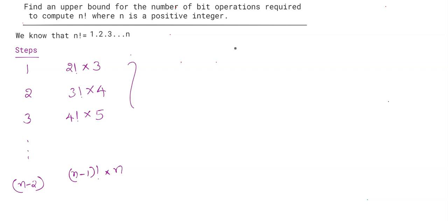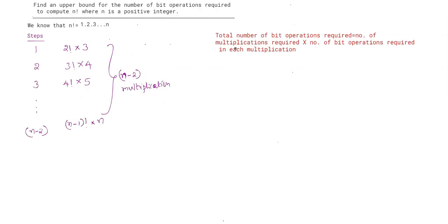Thus we can see that we require n−2 multiplications to obtain n factorial. We have decomposed the process of finding factorial into a number of multiplications. The total number of bit operations required to obtain n factorial equals the number of multiplications required times the number of bit operations required in each multiplication.